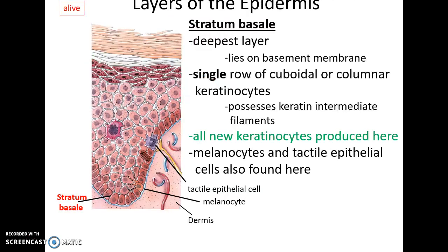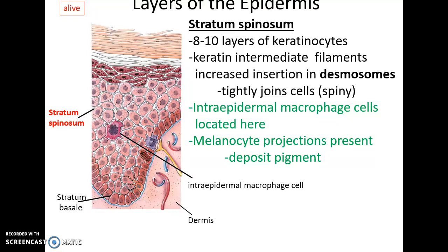The epidermis has many layers. The deepest layer is the stratum basale, lying on the basement membrane. It is a single row of cells filled with keratin intermediate filaments; all cell division and all keratinocyte production occurs here. Melanocytes and tactile epithelial cells are also found in this layer. The next layer is stratum spinosum, made up of about eight to ten layers of keratinocytes. Intermediate filaments form tight junctions and desmosomes, and intraepidermal macrophage cells are found here. Melanocytes send projections to these cells and deposit the pigment melanin into the keratinocytes.